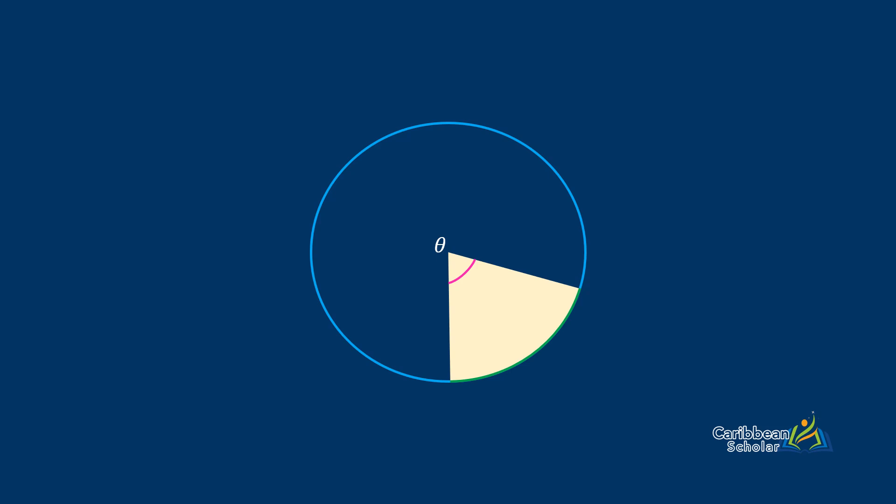To find the length of an arc, we do theta over 360 times 2πr. Since theta is the angle within the sector, this formula is telling us to take the fraction of the circle that we want and then multiply that by the entire circumference to get the length of the arc.